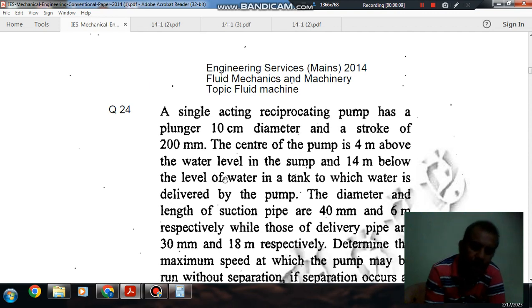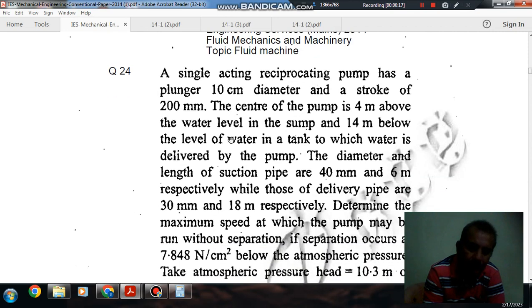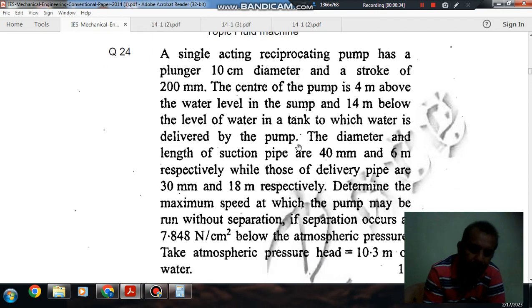Question No. 24 from Engineering Services Main 2014: A single acting reciprocating pump has a plunger 10 cm diameter and a stroke of 200 mm. The center of the pump is 4 m above the water level in the sump and 14 m below the level of water in the tank to which water is delivered by the pump.